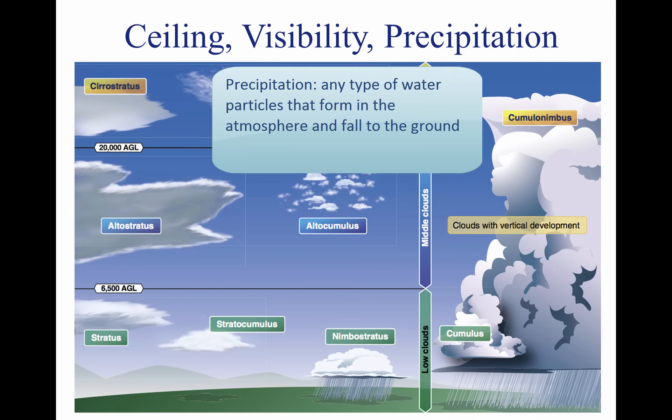Precipitation refers to any type of water particles that form in the atmosphere and fall to the ground. It has a profound impact on flight safety. Depending on the form of precipitation, it can reduce visibility, create icing situations, and affect landing and takeoff performance of an aircraft. Precipitation occurs because water or ice particles in clouds grow in size until the atmosphere can no longer support them.